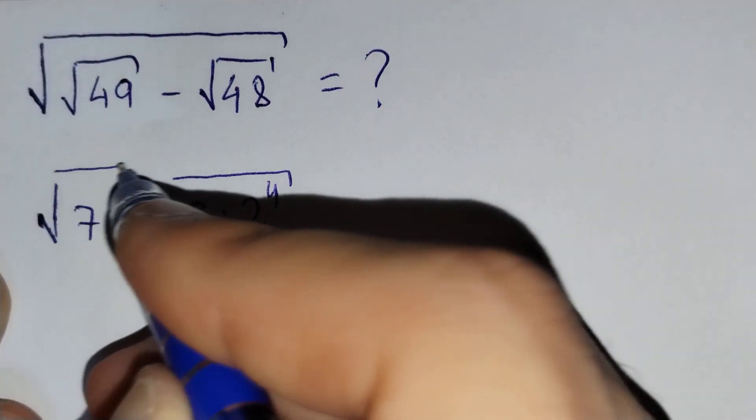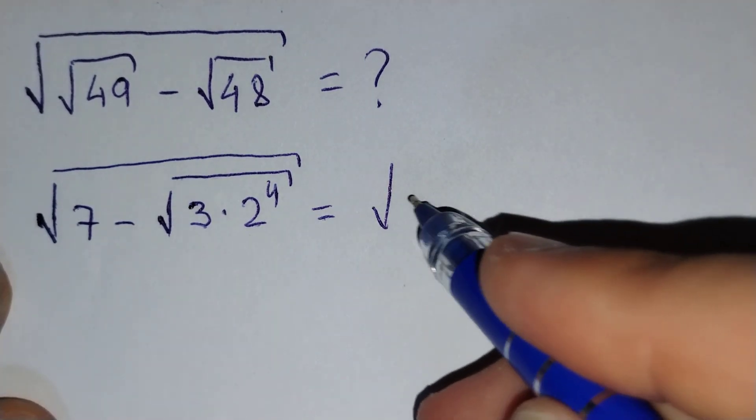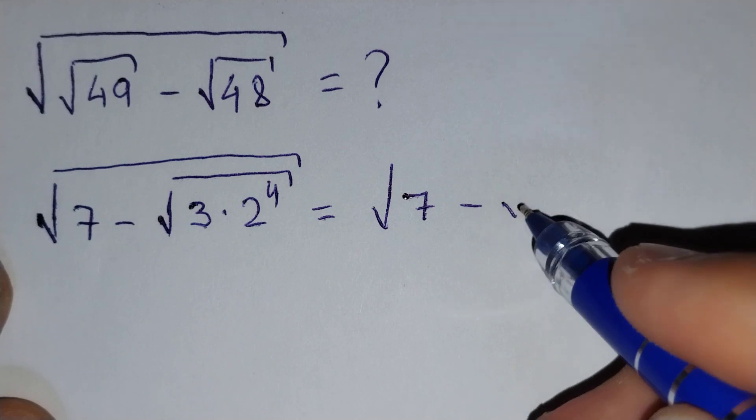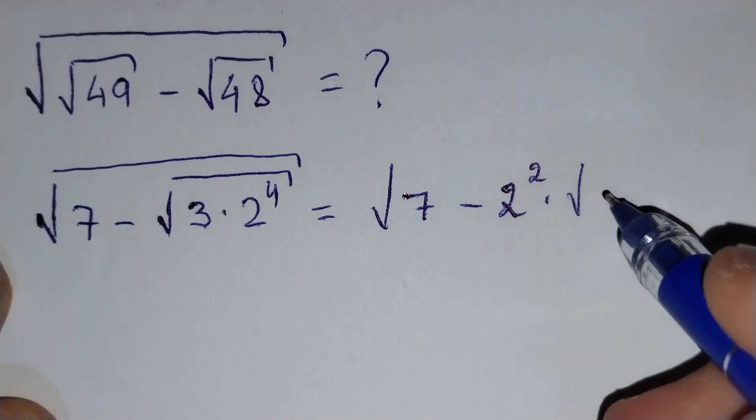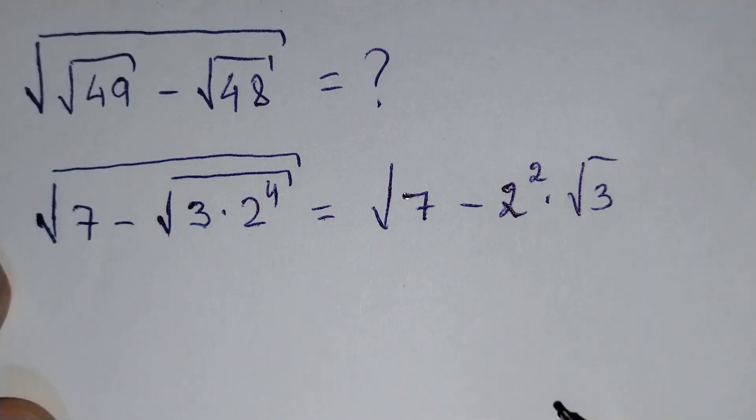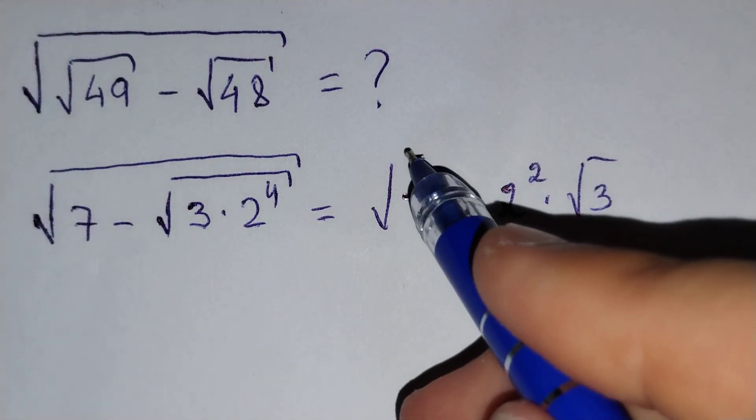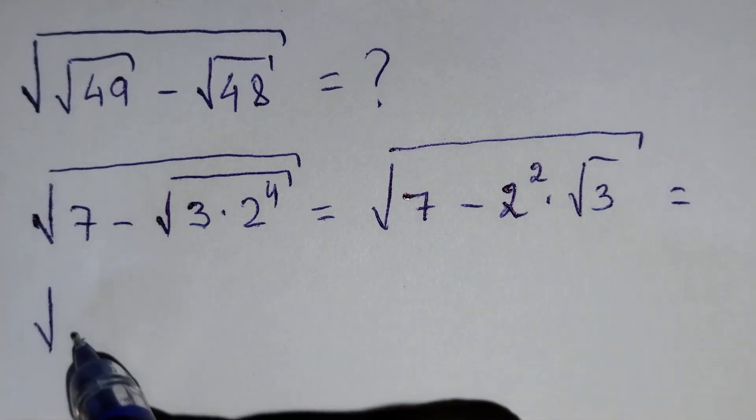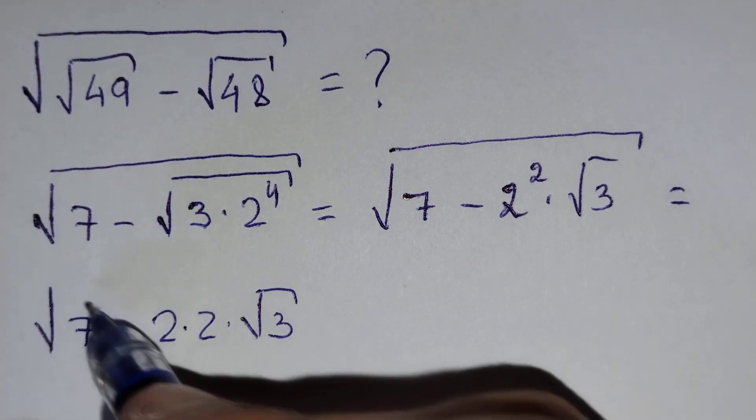Am I right? Equals to square root of 7 minus 2 power 2 times square root of 3. Then it means square root of 7 minus 2 times 2 times square root of 3.